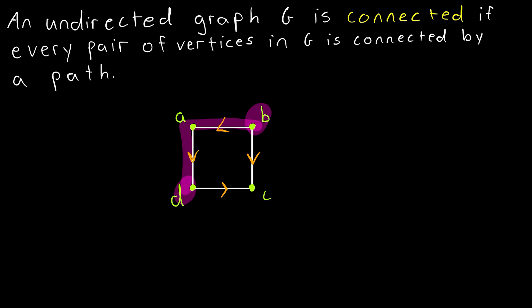And in fact, there is no way to get from the vertex D to the vertex B in this directed graph. So it seems we have to be a bit more specific in discussing what it means for a pair of vertices to be connected by a path in directed graphs.